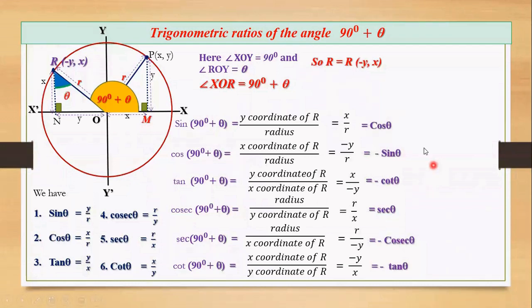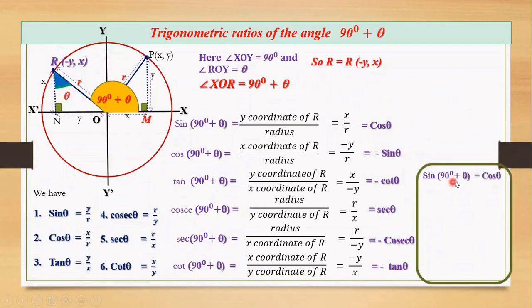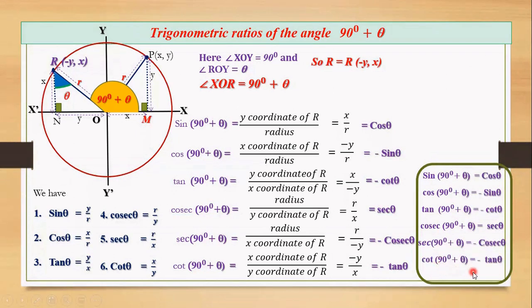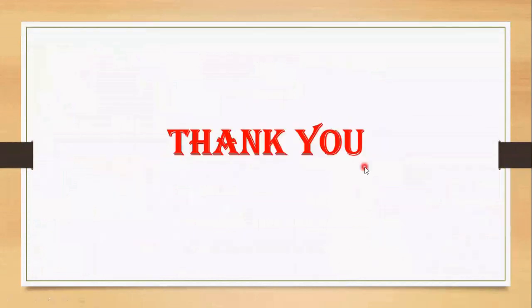Now let's write the conclusion. Sin(90° + θ) = cos θ. Cos(90° + θ) = −sin θ. Tan(90° + θ) = −cot θ. Cosec(90° + θ) = sec θ. Sec(90° + θ) = −cosec θ. Hence we have all the trigonometric ratios of the angle 90 degree plus theta. Okay students, this much for now. Thank you for watching this video.